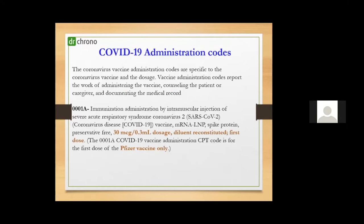These are vaccination administration codes, specific to each vaccine or dosage given. The vaccine administration codes report the work of administering the vaccine. They also include counseling of the patient or the caregiver and documentation in the medical record. We have four sets of codes for the vaccine administration codes, starting with 0001A, which is given as the first dose only for the Pfizer vaccine at a dosage of 30 MCG per 0.3 ml.